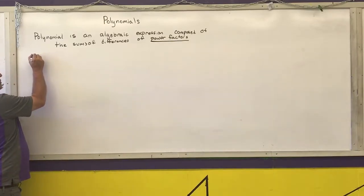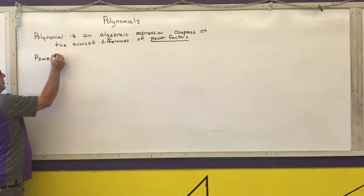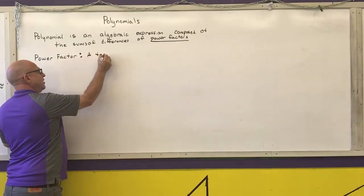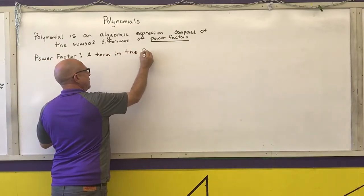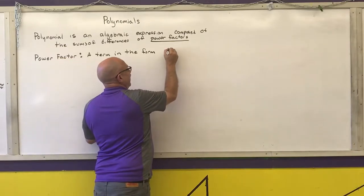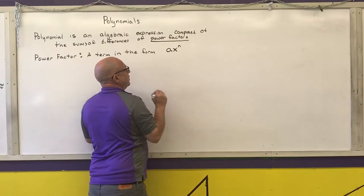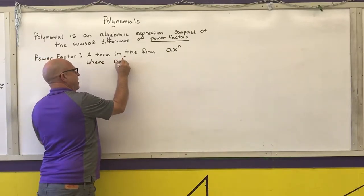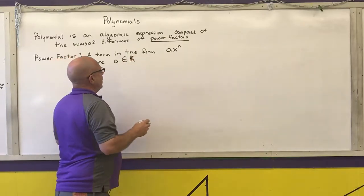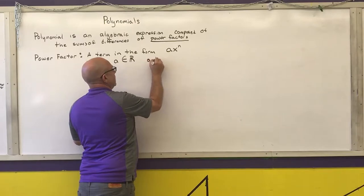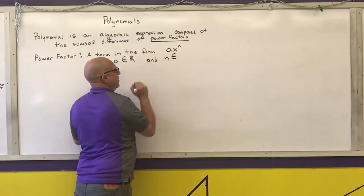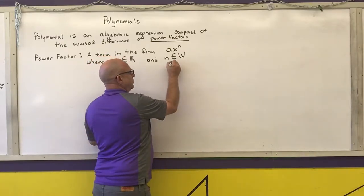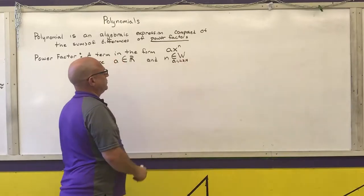A power factor is any term in the form A·X^N, where A is an element of the real numbers and N is an element of the whole numbers. As a reminder, our whole numbers are 0, 1, 2, 3, 4, all the way up to infinity.